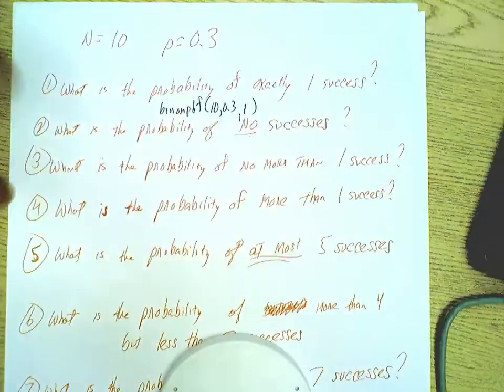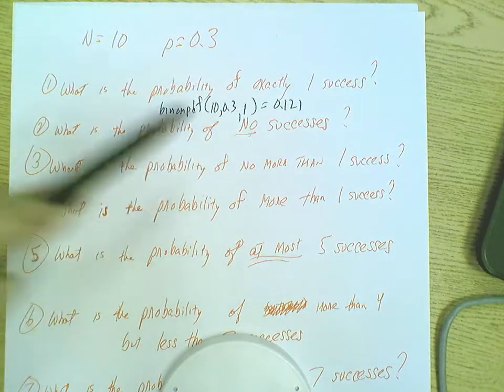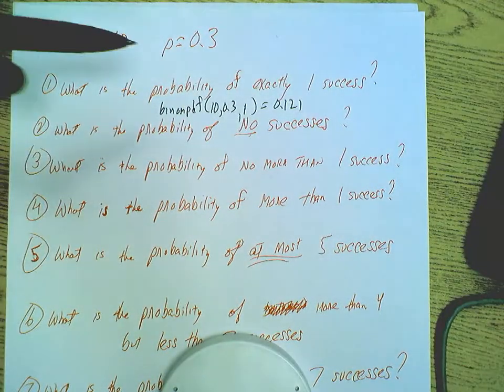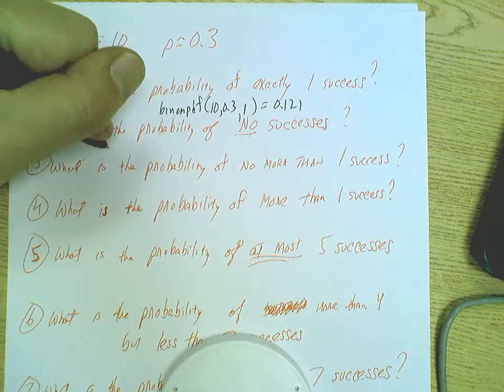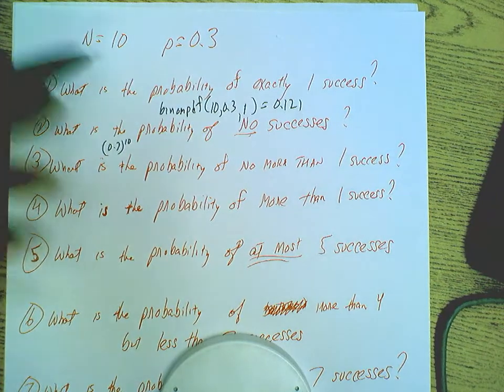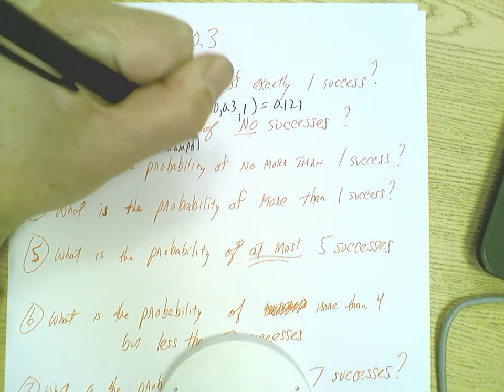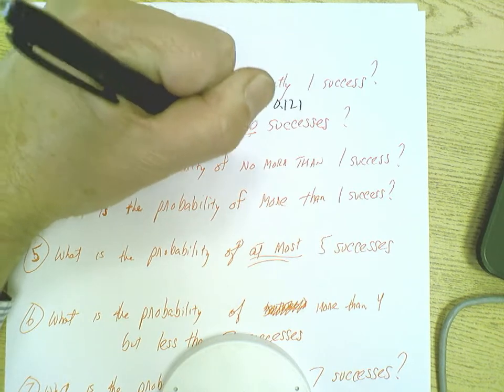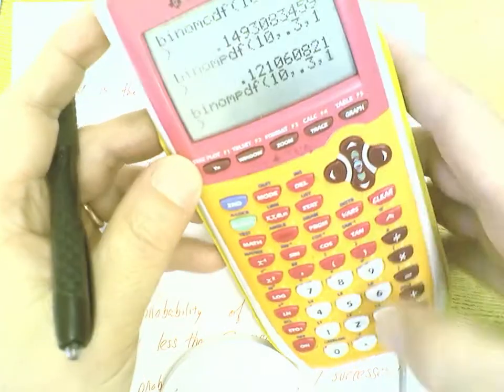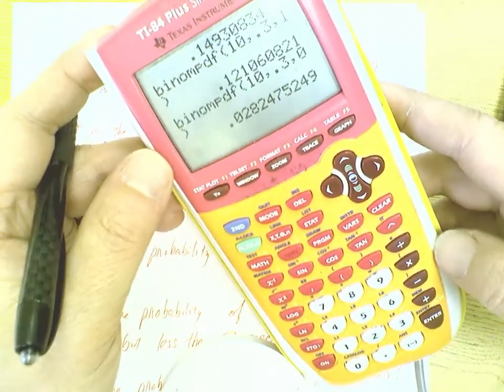What's the probability of no successes? Well there's a couple ways we could do this. Probability of failure is 0.7, so I could do, as some people said in class, 0.7 to the 10th. But let's just stay with calculator skills. I'm going to have a binomial PDF 10, 0.3, 0. I'll go ahead and run that, I've got to update my calculator. Here's my command and the answer comes back as 0.028.